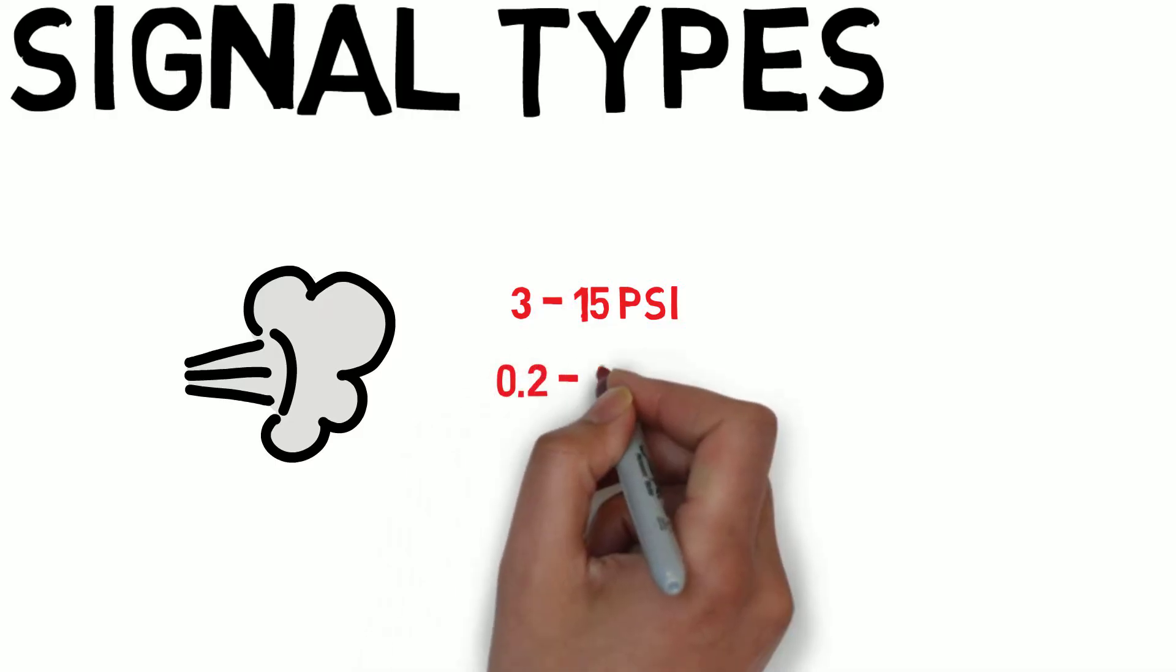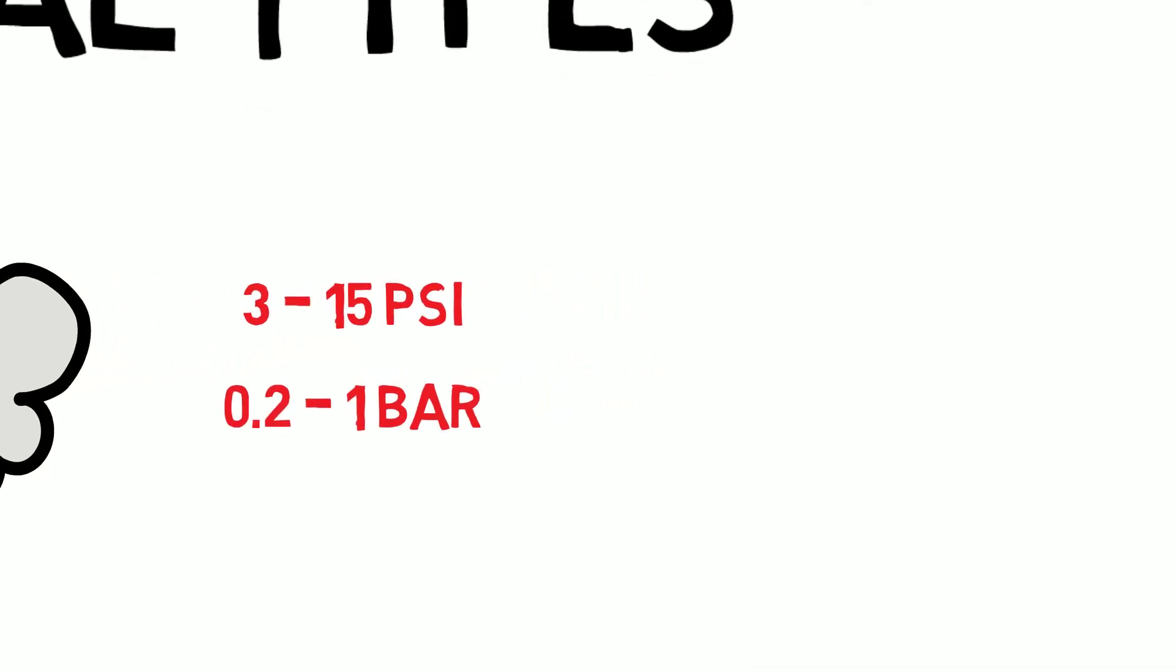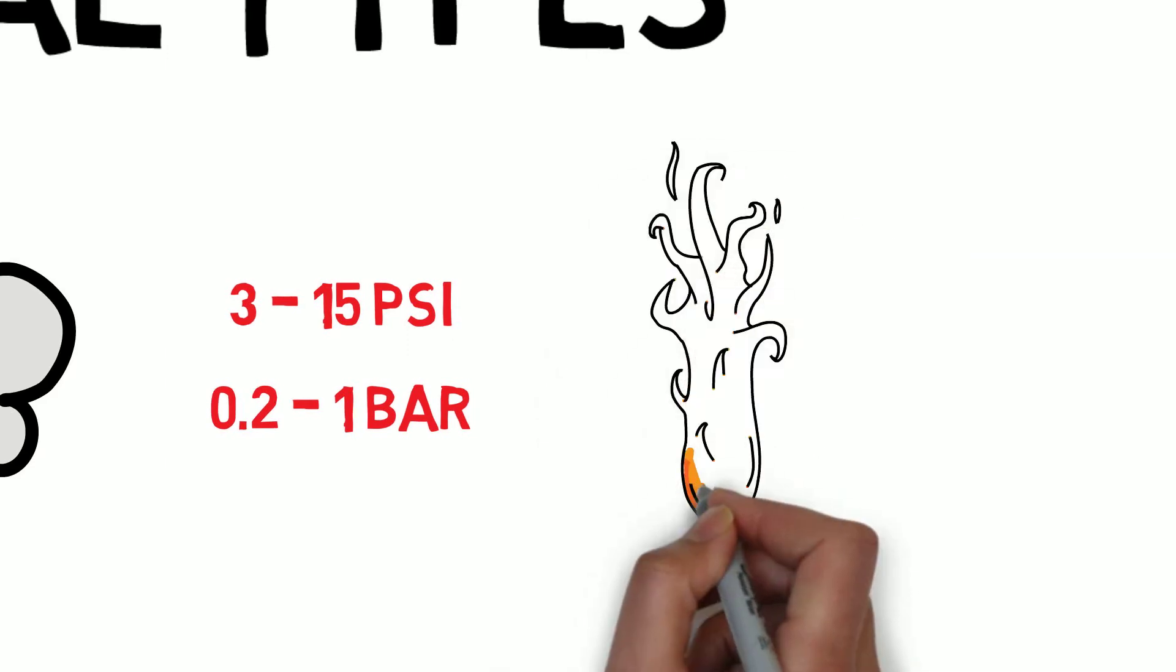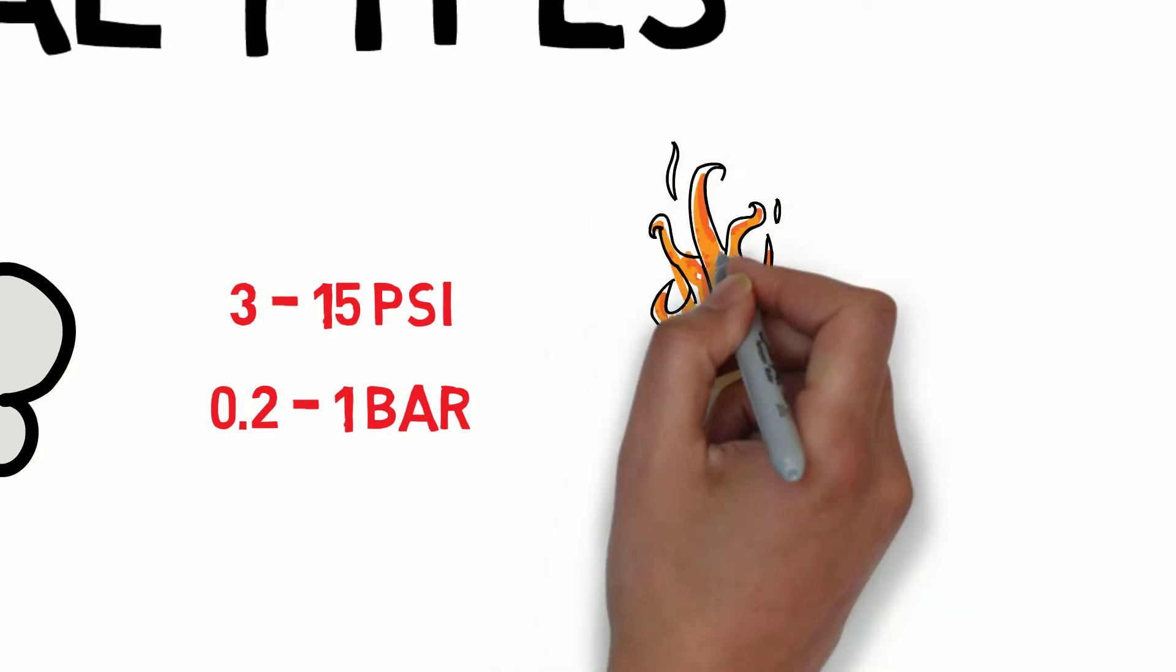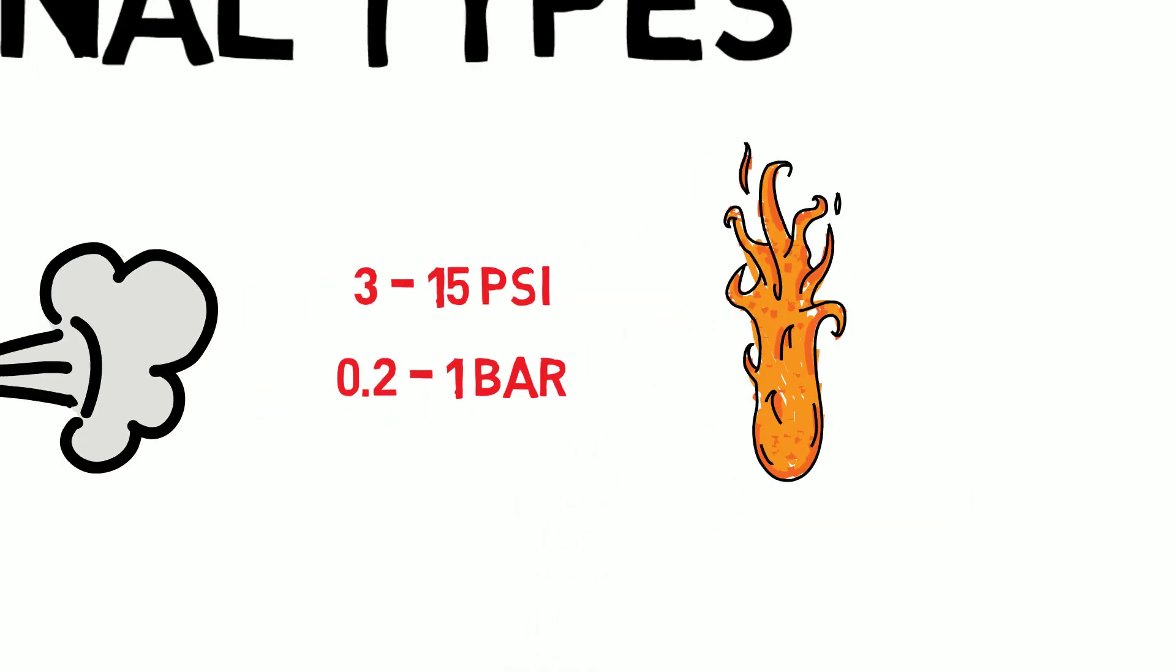Pneumatic transmitters are useful when there might not be local infrastructure in place to carry and receive electrical signals. They also have application in hazardous areas where controlling source of ignition is of high importance. In this instance pneumatic transmitters can be used in place of ATEX or IEC rated equipment.